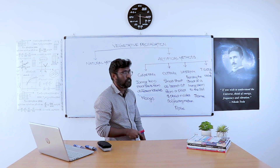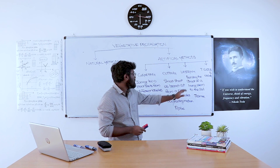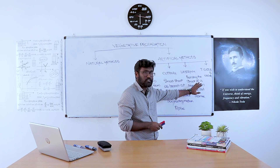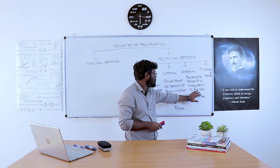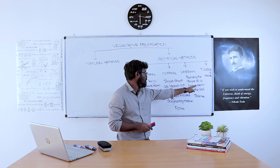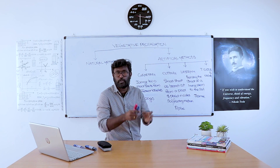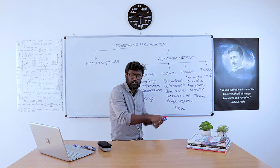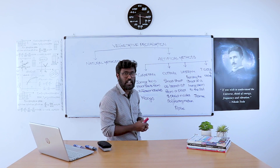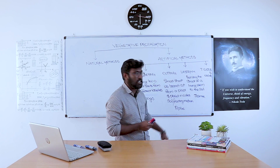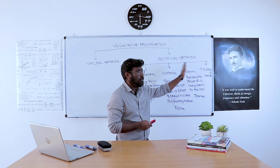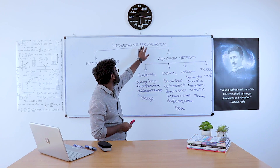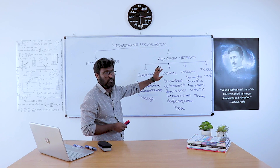In the case of layering, it is the bending of a shoot of a living stem to the soil to produce a new individual. Bending the shoot of a living stem to the soil to produce a new individual is called layering. For example, jasmine. These are the types of artificial methods in vegetative propagation.